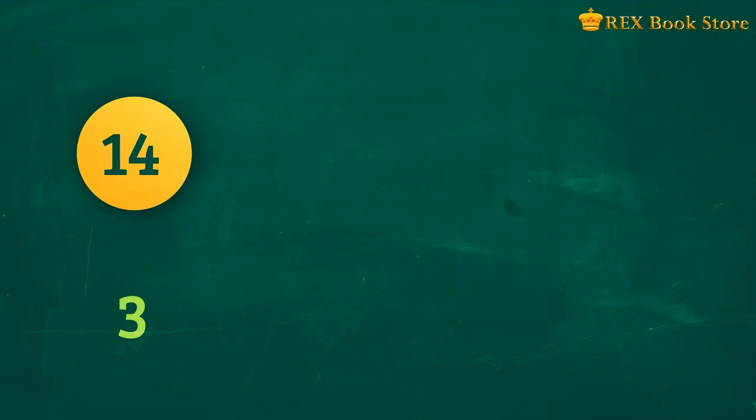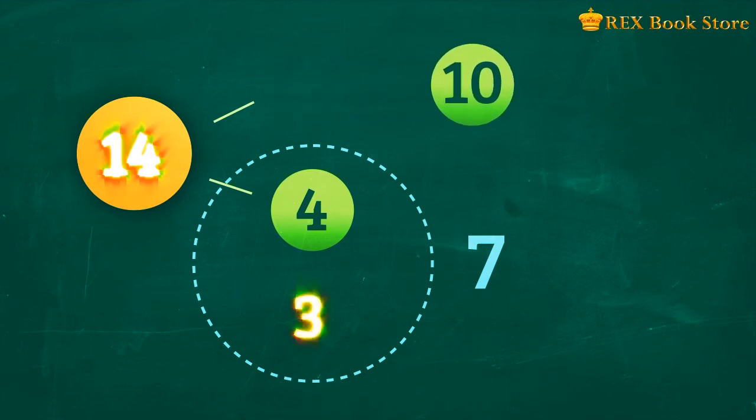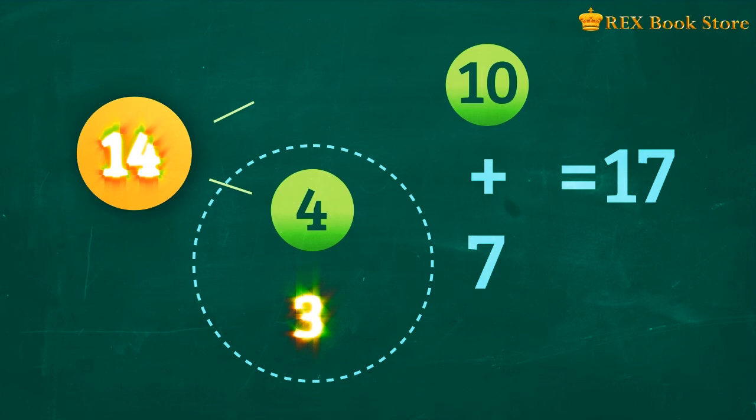Can you try this on your own? What is 14 plus 3? Use number bonds to show your answer. 14 plus 3 is equal to 10 plus 7. 10 plus 7 is equal to 17. So 14 plus 3 is equal to 17.